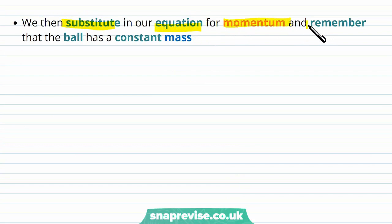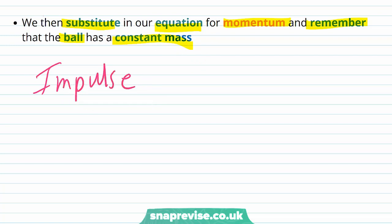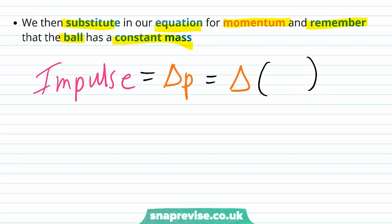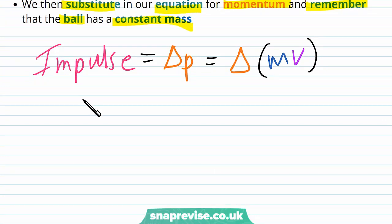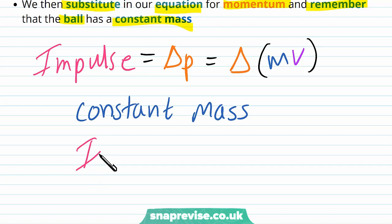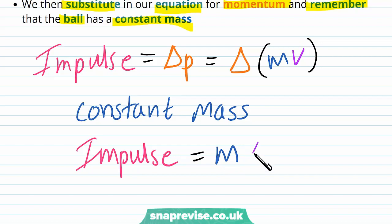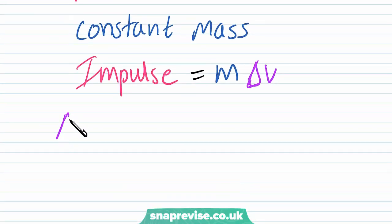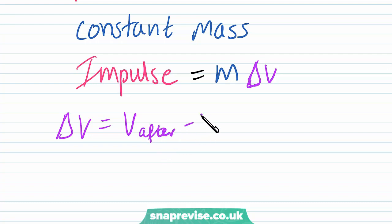We substitute in our equation for momentum, remembering that the ball has a constant mass. Impulse equals change in momentum, which equals the change in mass times velocity — since momentum is mass multiplied by velocity. Since the mass doesn't change and is constant, the impulse equals the mass multiplied by the change in velocity. The change in velocity is given by velocity after minus velocity before the collision, so before the foot hits the ball.